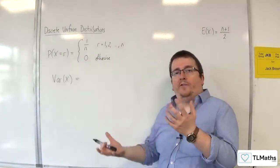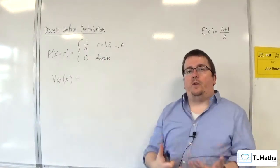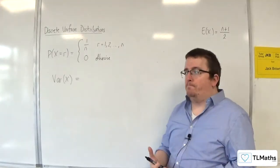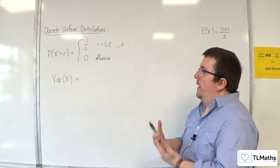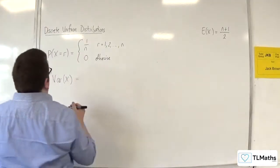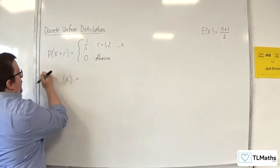Var of X is going to require us to have E of X squared take away E of X all squared. So in order to find that, I need to find E of X squared.